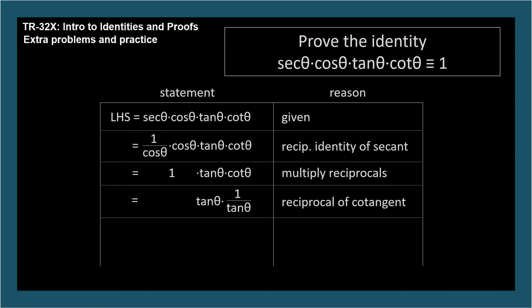Finally, we know when we multiply reciprocals, tangent times 1 over tangent, we get 1. So our expression equals 1, and the reason for this step is multiply reciprocals. This expression equals the right-hand side of the problem statement, so we can declare in our last line that our expression equals the right-hand side, and we're finished.